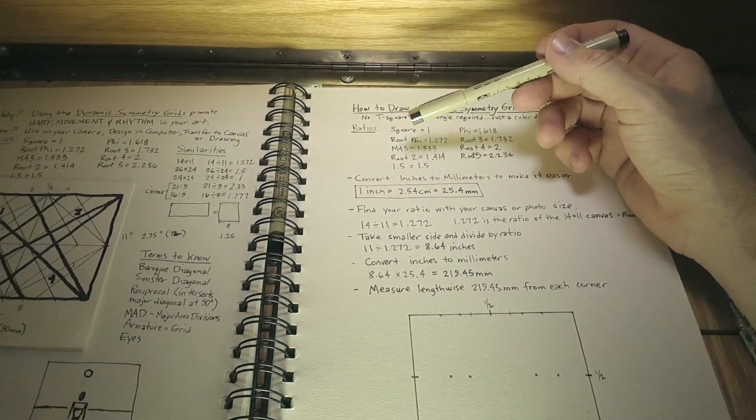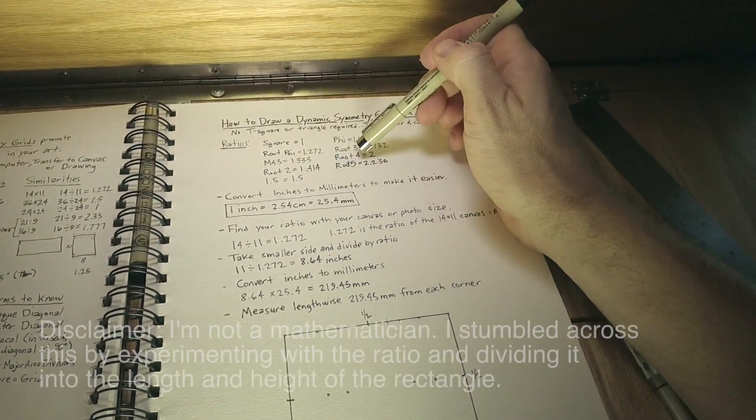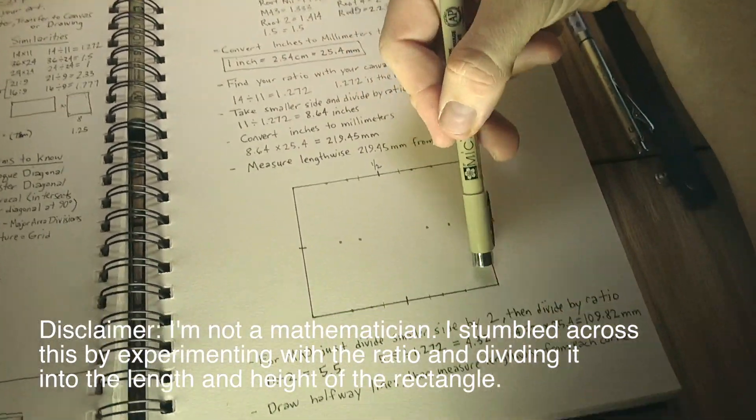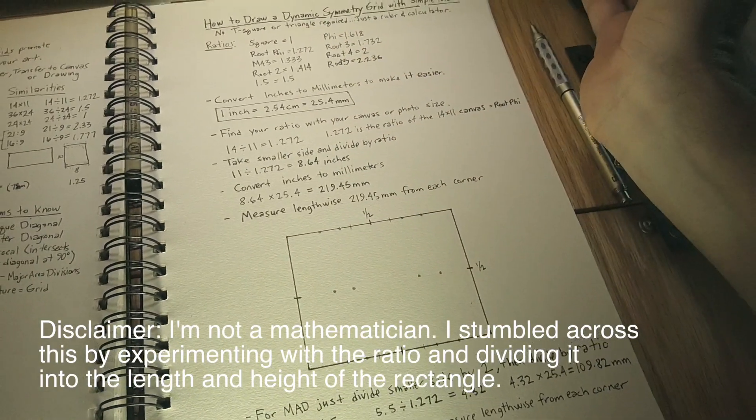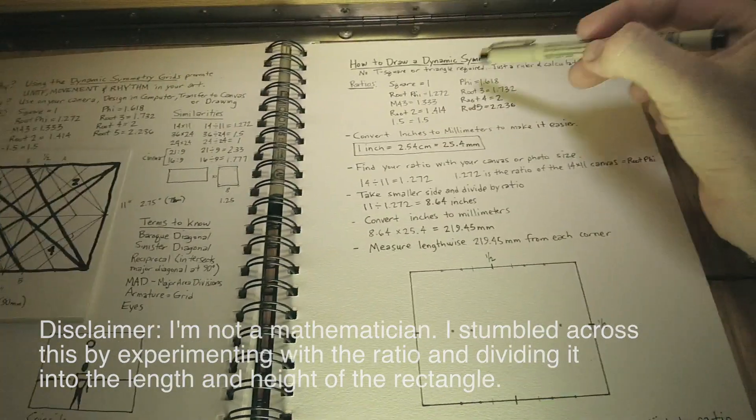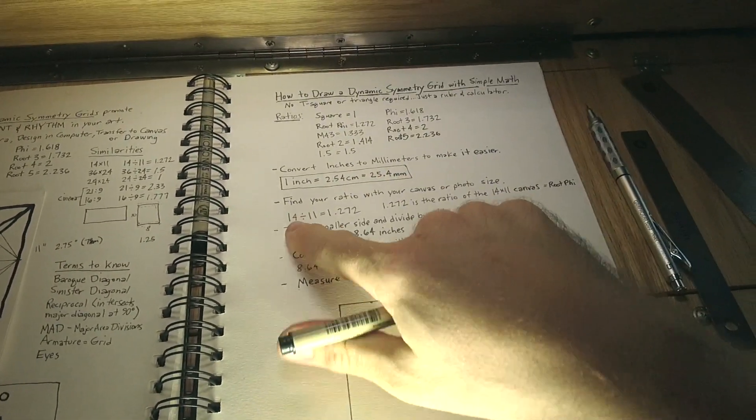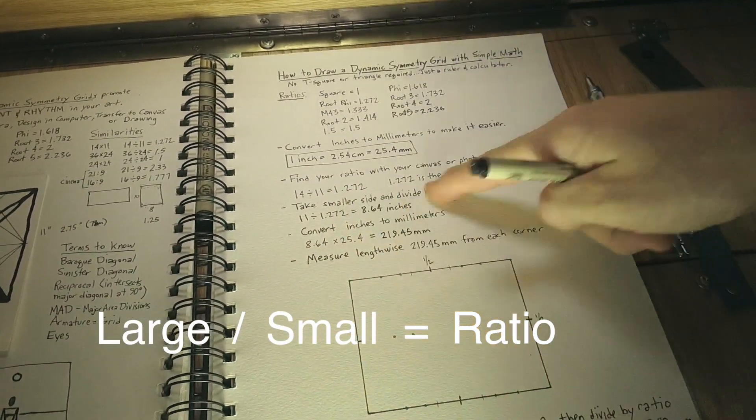We covered how all the root rectangles have a certain ratio. So this ratio is going to come in handy when we try to draw our right angles of the dynamic symmetry. If you have an arbitrary canvas size or photo size or anything, we can figure out the ratio just by dividing the larger number into the smaller number and we get our ratio.